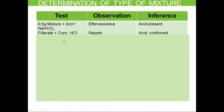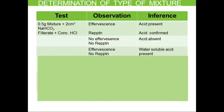We then filter it and to the filtrate add concentrated HCl. However, there was no reprecipitation. Where we get effervescence but no reprecipitation, the inference would be that a water-soluble acid may be present. We confirm the medium is acidic enough by placing a drop of the filtrate on blue litmus paper — it turns red. Still no reprecipitation, hence a water-soluble acid may be present.